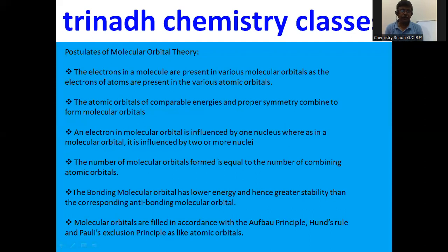In my previous video on molecular orbital theory, I discussed the postulates of molecular orbital theory. According to this molecular orbital theory, which was proposed by Hund and Mulliken, the electrons in a molecule are present in various molecular orbitals, just as the electrons of atoms are present in various atomic orbitals.